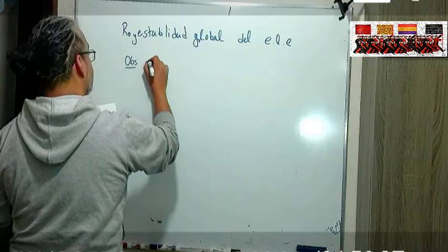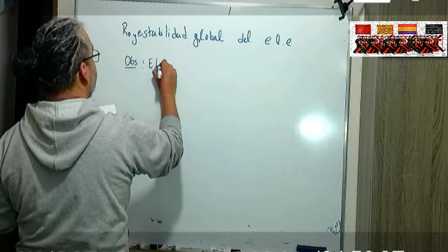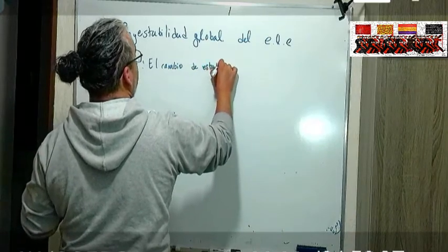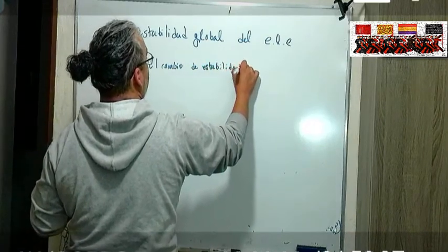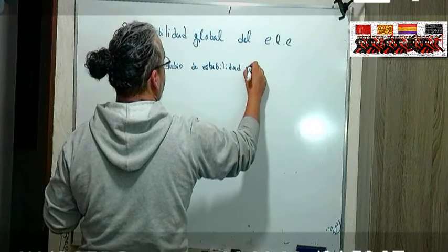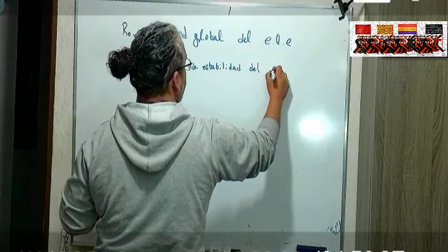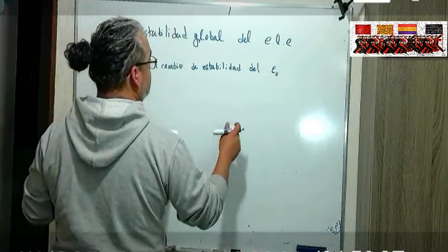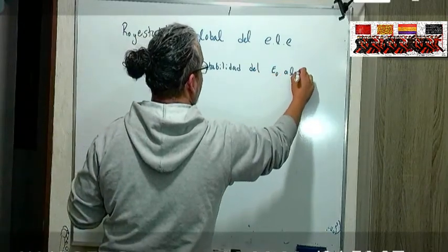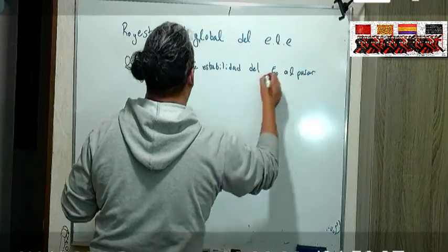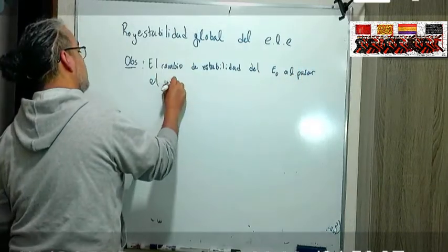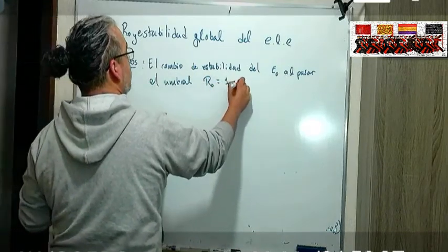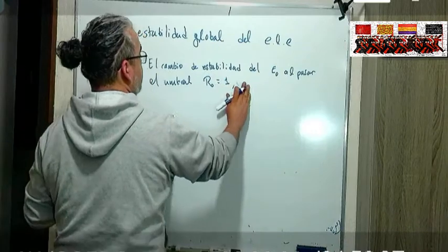Entonces, la primera observación es que el cambio de estabilidad del equilibrio libre de enfermedad que vamos a llamarle E0, al pasar el umbral R0 igual a 1, corresponde a una bifurcación transcrítica.